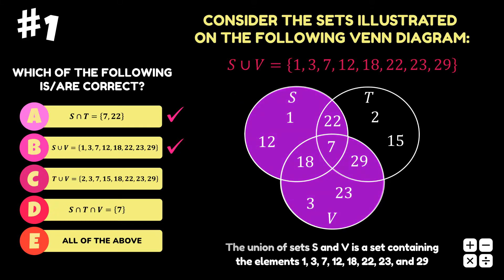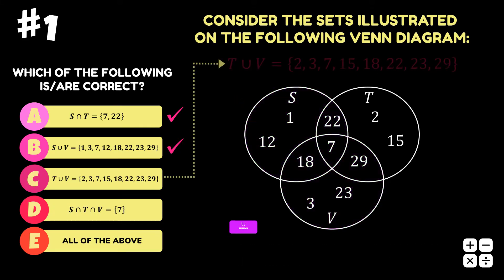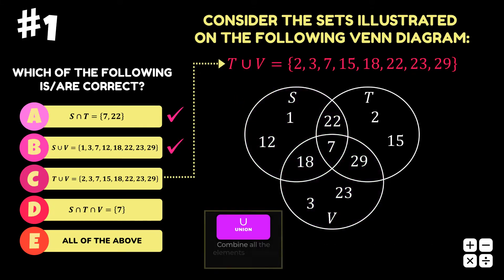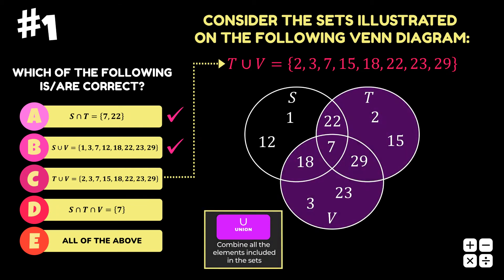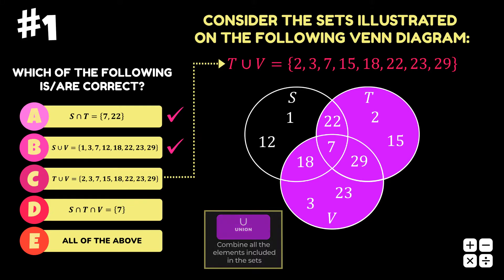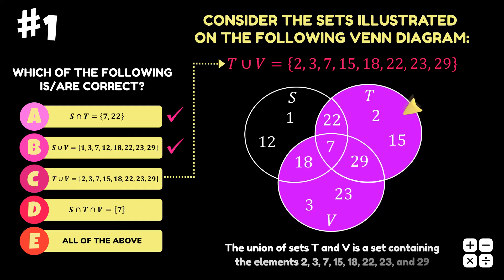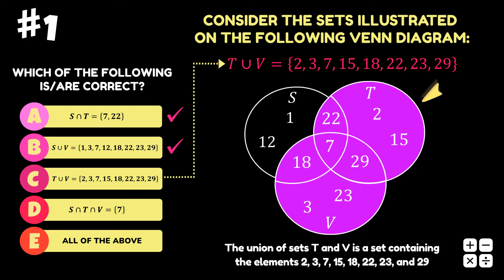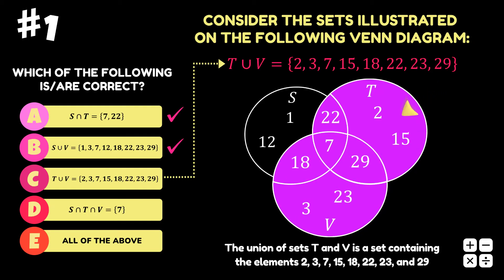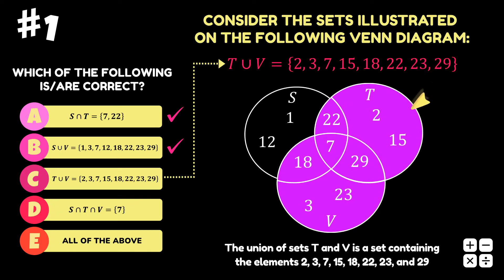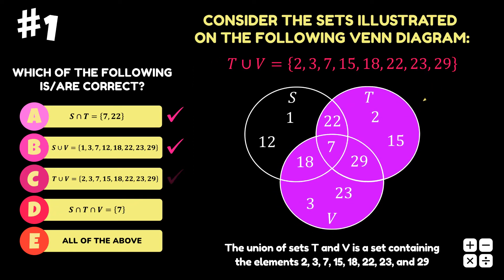Option C is the union of sets T and V. Looking at the Venn diagram, the union of sets T and V is the area occupied by both of these sets, and the elements in this combined area are 2, 3, 7, 15, 18, 22, 23, and 29. Therefore, option C is correct.